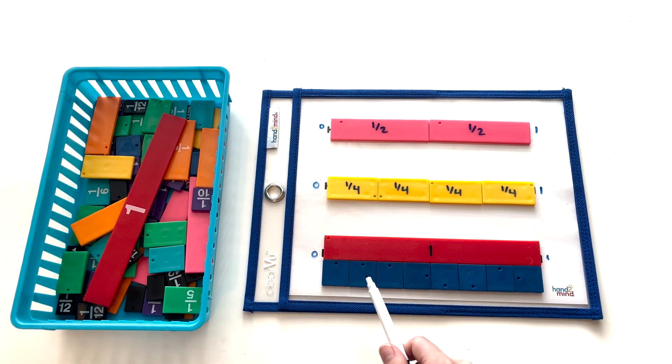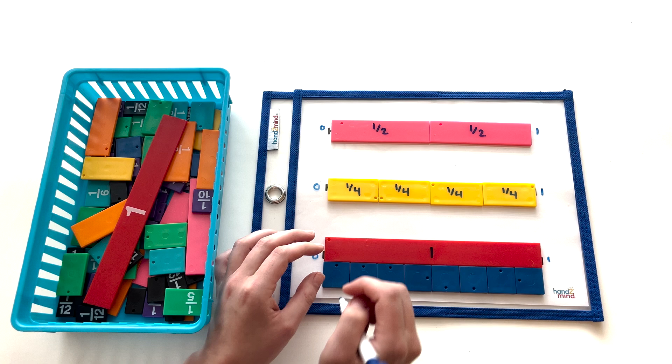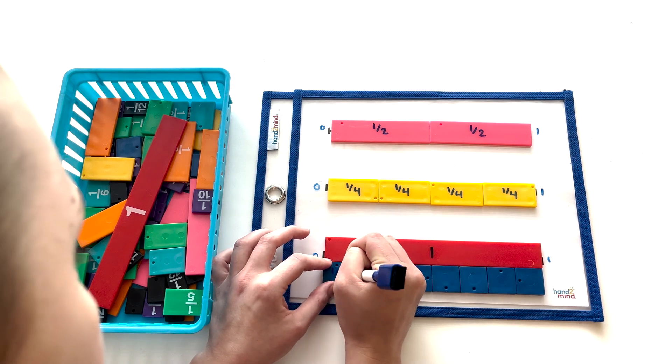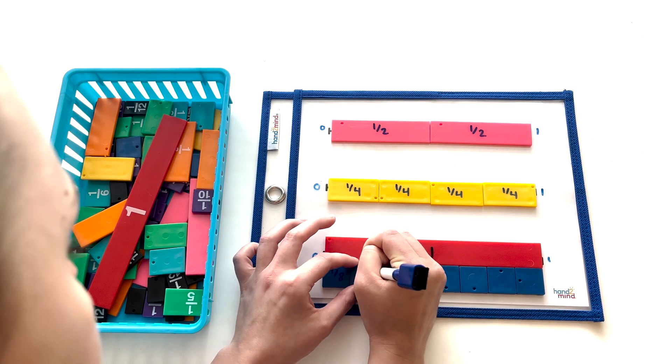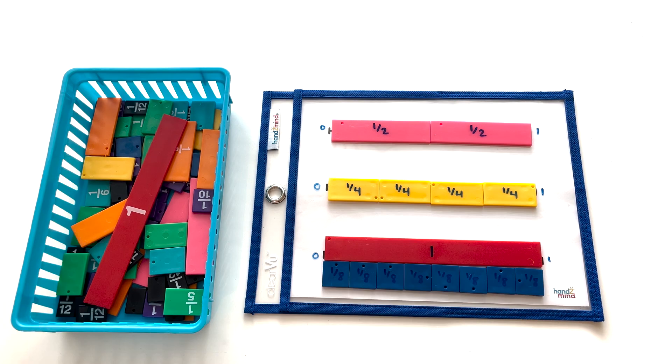We can see that one, two, three, four, five, six, seven, eight of these dark blue fraction tiles equals one whole. And so we can label the blank side of each of these with the fraction one-eighth.